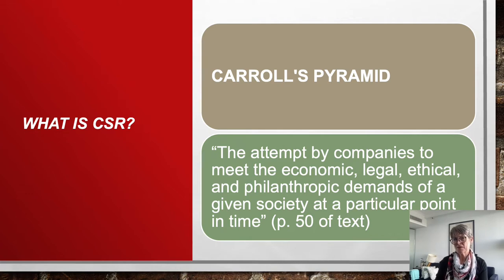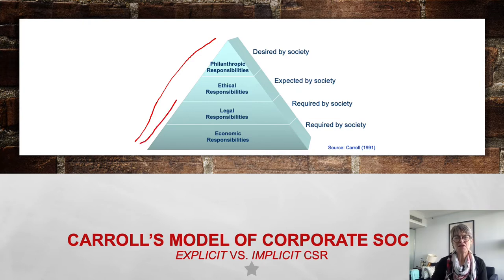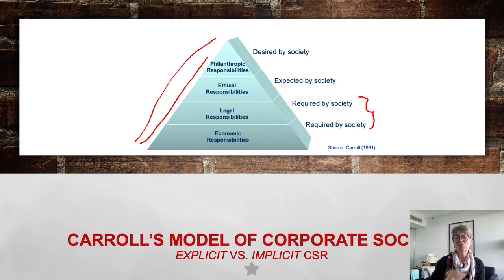Carroll's Pyramid is literally shaped like a pyramid with a hierarchy that moves upward. The bottom two levels - economic responsibilities and legal responsibilities - are required by society. For example, in Australia, you have to be financially viable to be legally operating a business. Those bottom two levels of the pyramid are needed before you can progress up.